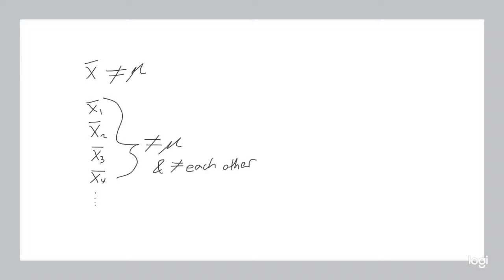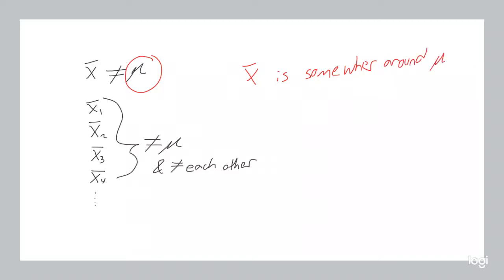So why is a sample mean useful? The population mean is the thing you want. Your sample mean is not equal to it, and your sample mean is not even unique. So why do we use it? Well, the short answer is we assume that the sample mean is somewhere around the population mean. But what does 'somewhere around' mean? Does that mean it's 5 off, or 100 off, or 5,000 off, or 0.1 off?